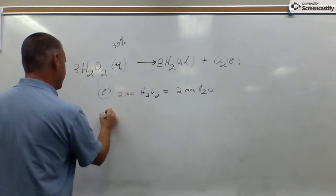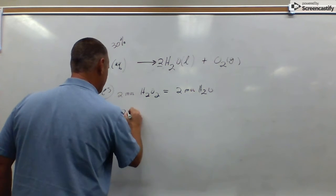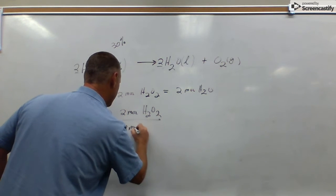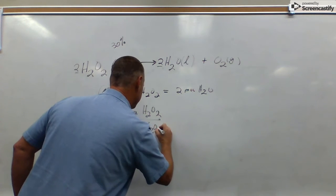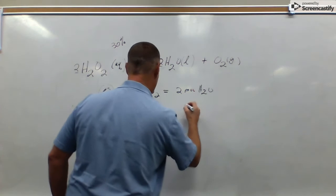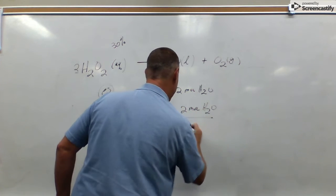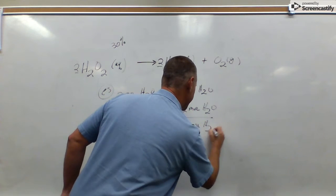So this is an equivalent statement. We can make two conversion factors out of it, 2 moles of H2O2 over 2 moles of H2O, or the reciprocal, with H2O in the numerator and peroxide in the denominator.